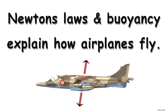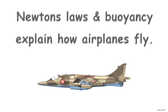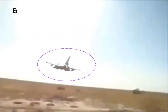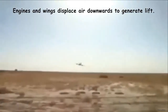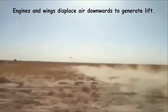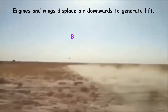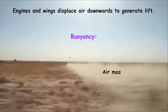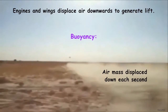This is a technical explanation of how planes fly. Engines and wings displace air downwards to generate lift. Planes achieve buoyancy and fly when the air mass displaced down each second equals the plane's mass.